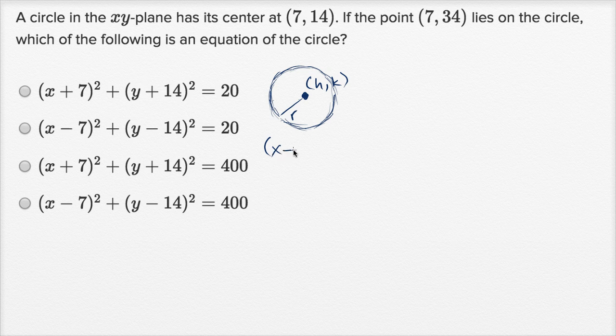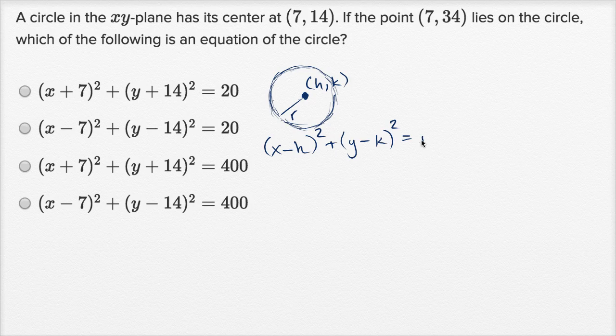is going to be x minus the x-coordinate of the center, squared, plus y minus the y-coordinate of the center, squared, is equal to the radius squared.